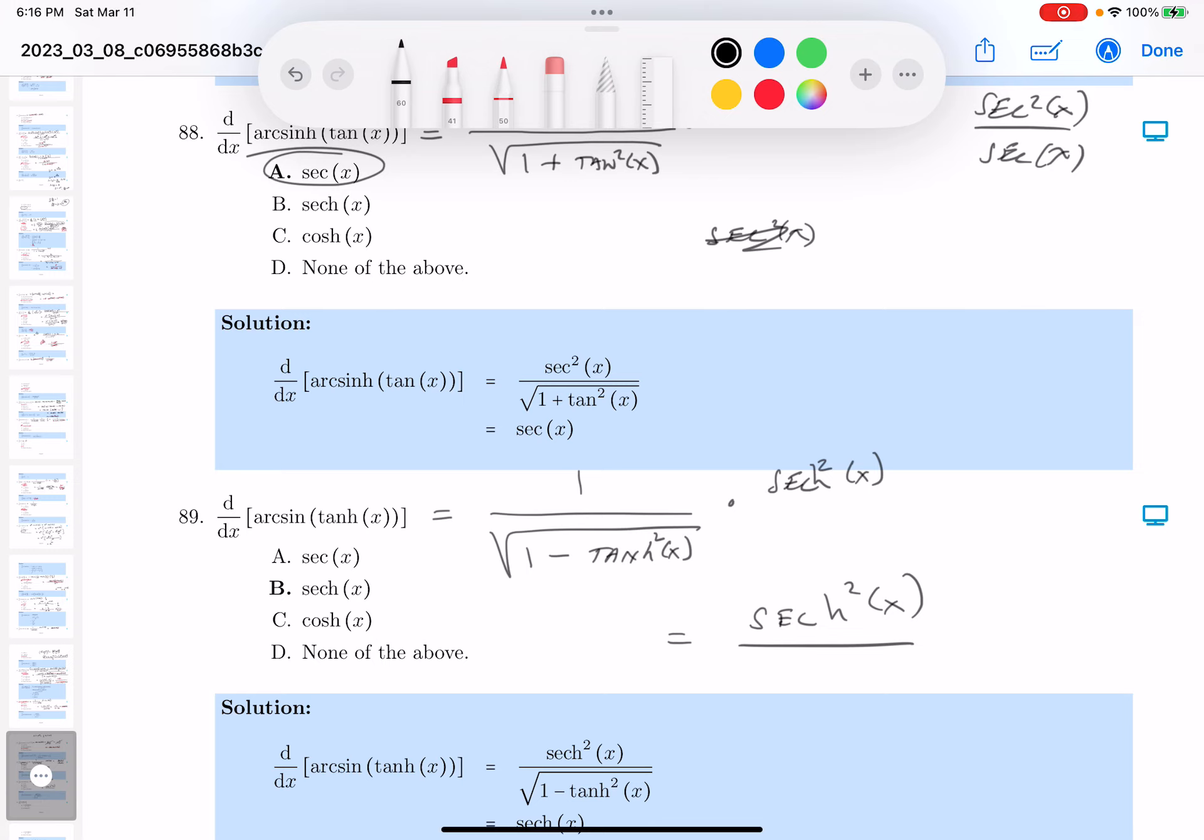And then 1 minus the hyperbolic tangent squared is going to be secant squared, so it's square root of that secant, hyperbolic secant, which is going to give me hyperbolic secant.